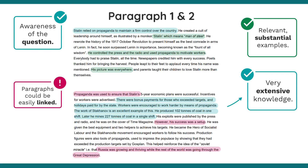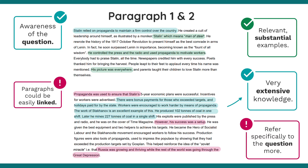Across this paragraph there are sentences and phrases that imply awareness of the question, but I feel it could be a little more explicit rather than implicit. For example, where they say 'however his success was a setup,' you could add 'He was using lies and propaganda to remain in power.' And the final sentence — 'Russia was growing and thriving while the rest of the world was going through the Great Depression' — could be followed with 'Stalin had successfully used propaganda to help remain in power.' I don't recommend using the same phrases over and over, but just a little more explicit reference to the question would be really excellent.